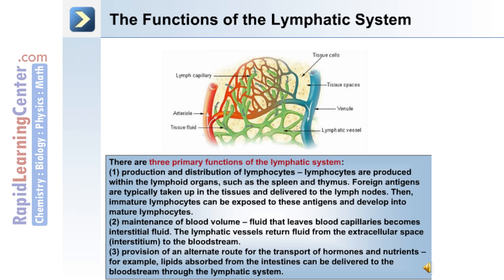The second major function is the maintenance of blood volume. Fluid that leaves blood capillaries becomes interstitial fluid, and the lymphatic vessels return this fluid from the extracellular space back to the bloodstream. The third primary function is providing an alternate route for the transport of hormones and nutrients. For example, lipids absorbed from the intestines can be delivered to the bloodstream through the lymphatic system.